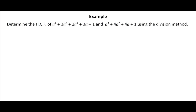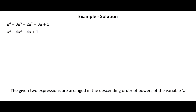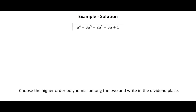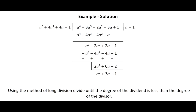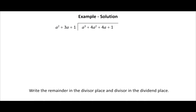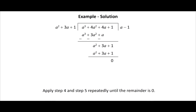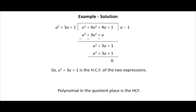Let us learn how to find HCF using the division method. Determine the HCF of (a to the power 4 plus 3a cubed plus 2a squared plus 3a plus 1) and (a cubed plus 4a squared plus 4a plus 1). Step 1: arrange expressions in descending order of powers of a. Step 2: choose the higher order polynomial as the dividend. Step 3: write the other as the divisor. Step 4: perform long division until the degree of the remainder is less than the divisor. Steps 5 and 6: repeat using the remainder as the new divisor until remainder is 0. Step 7: the last non-zero divisor is the HCF — therefore a squared plus 3a plus 1 is the HCF.